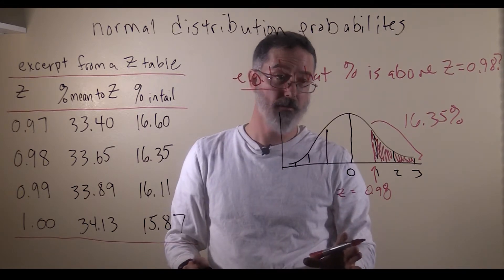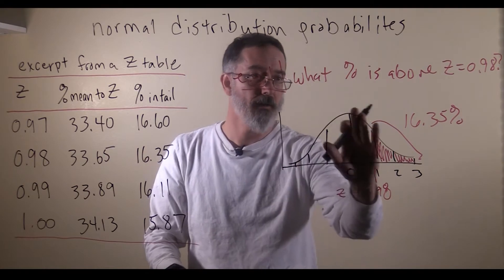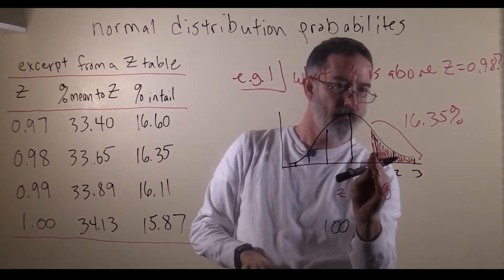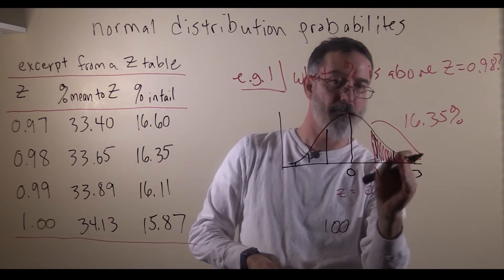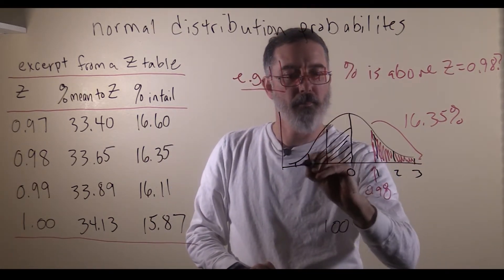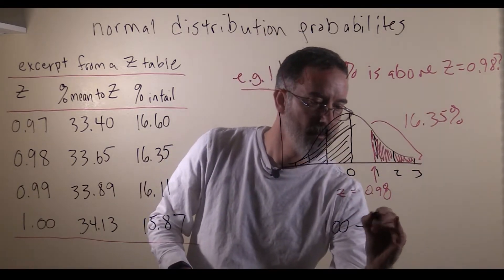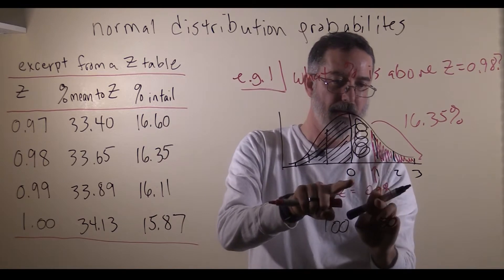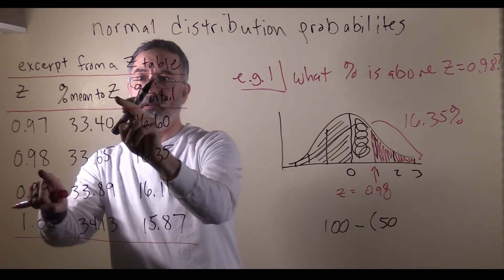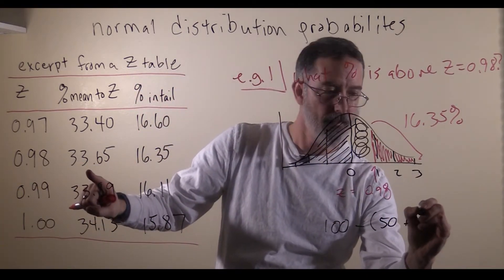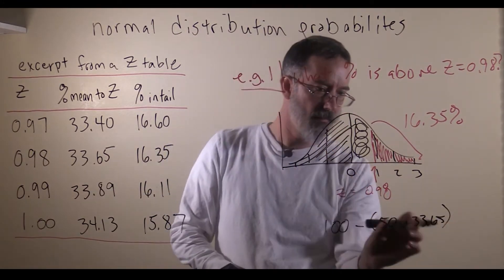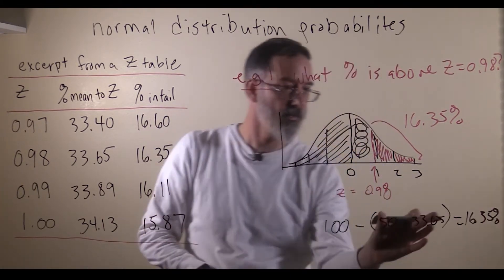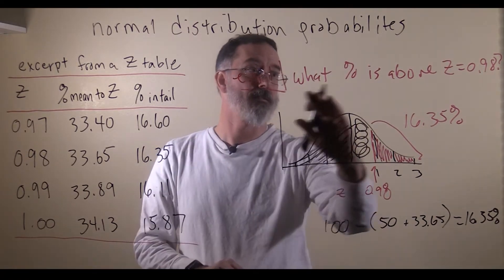There is another way we could have solved it, though a bit trickier. The overall area of the whole distribution is 100%, so we could have subtracted out everything else. Below the mean is half the distribution — 50%. We also need to get rid of the area between the mean and z equals 0.98, which is another 33.65%. So 50 plus 33.65 gives us 83.65, and 100 minus 83.65 gives us 16.35% — a mathematically equivalent way of answering this question.